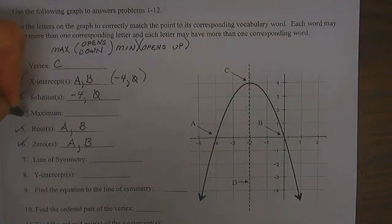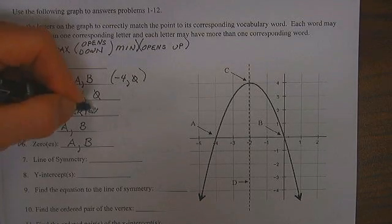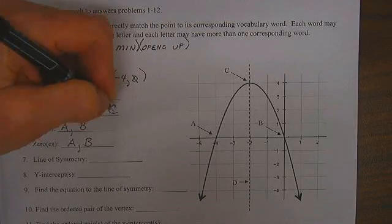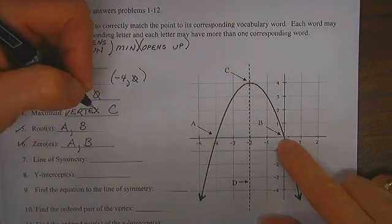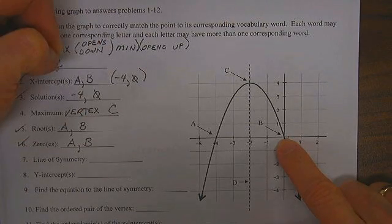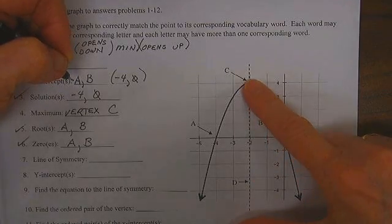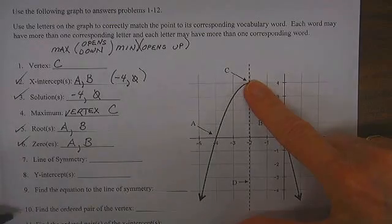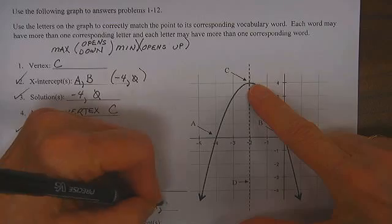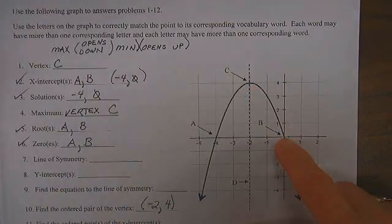The maximum here is also the vertex. It is point C. Here is the origin. The vertex point C is negative 2, positive 4. The ordered pair for the vertex is negative 2, positive 4. Here is the origin here at point B.